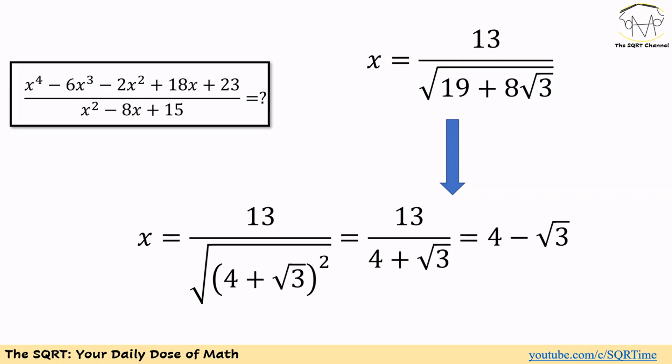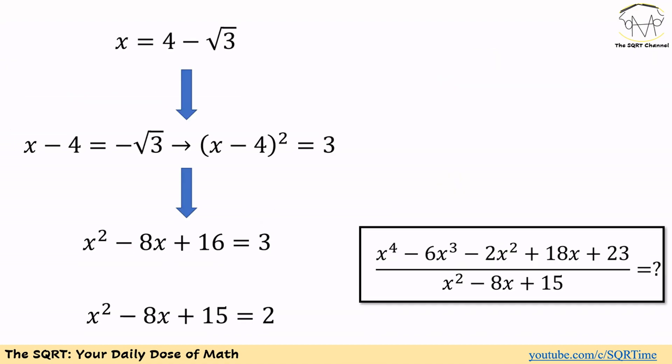From here we are going to use another identity. We multiply both numerator and denominator by 4 minus square root of 3. The numerator becomes 13 times (4 minus square root of 3) and the denominator becomes 16 minus 3, which is 13. The 13s in the top and bottom cancel, and at the end we have x equal to 4 minus square root of 3.